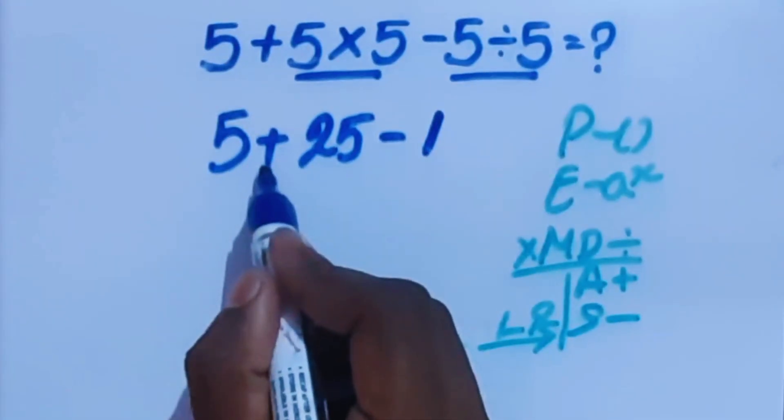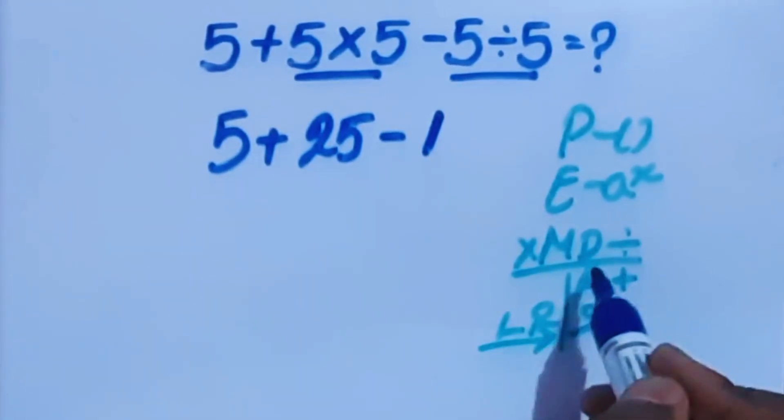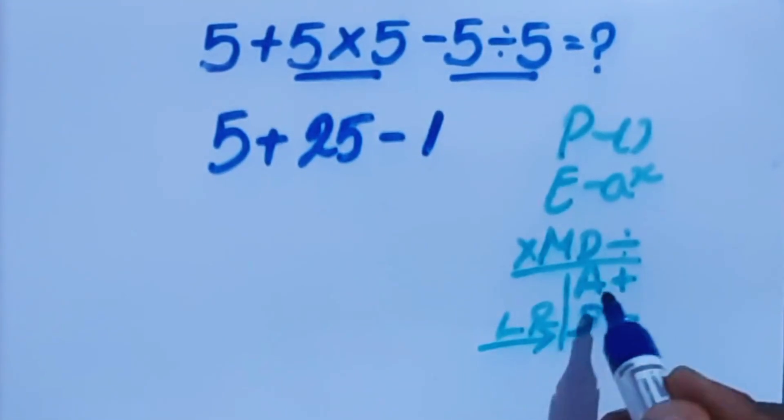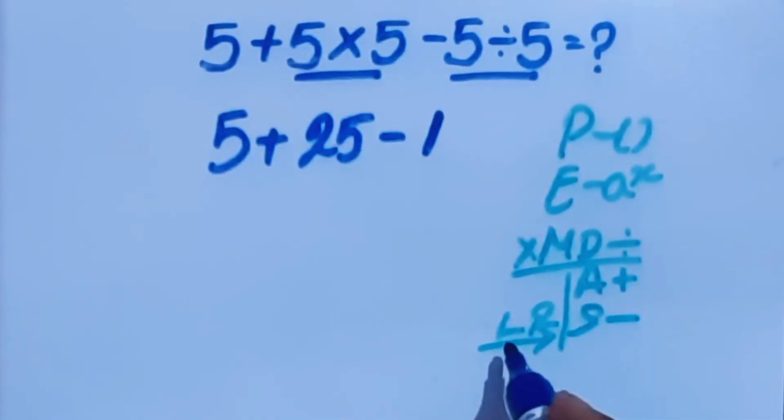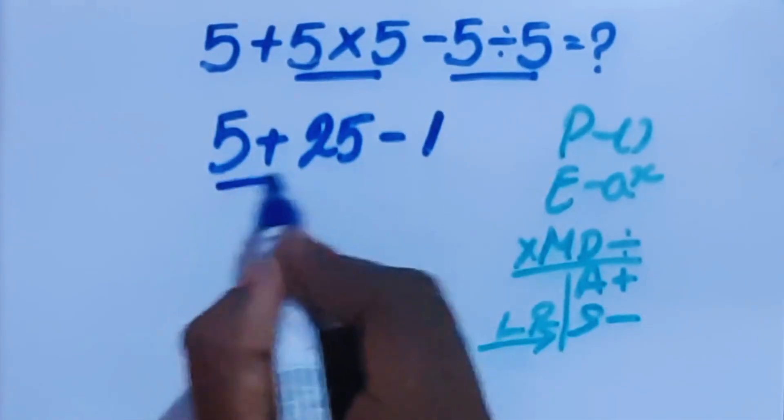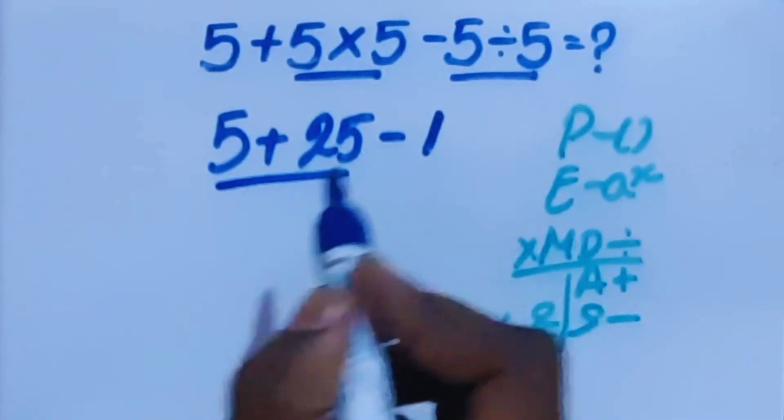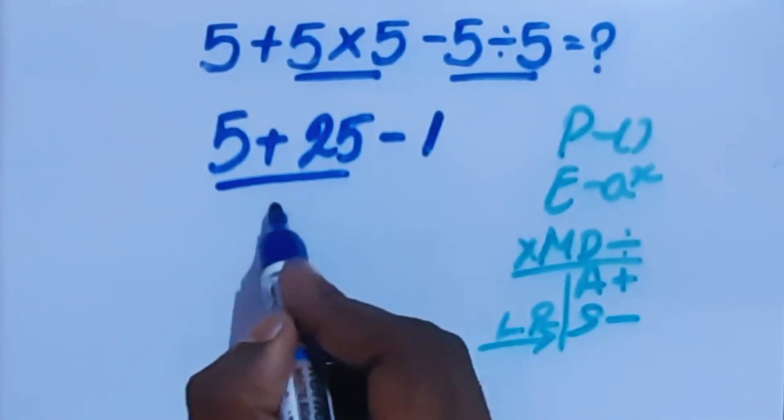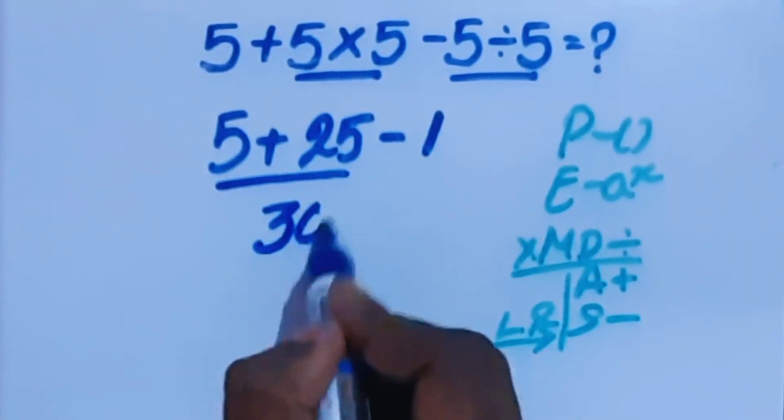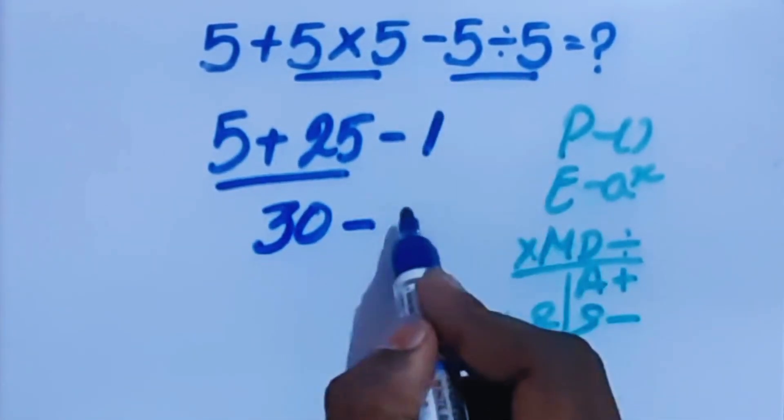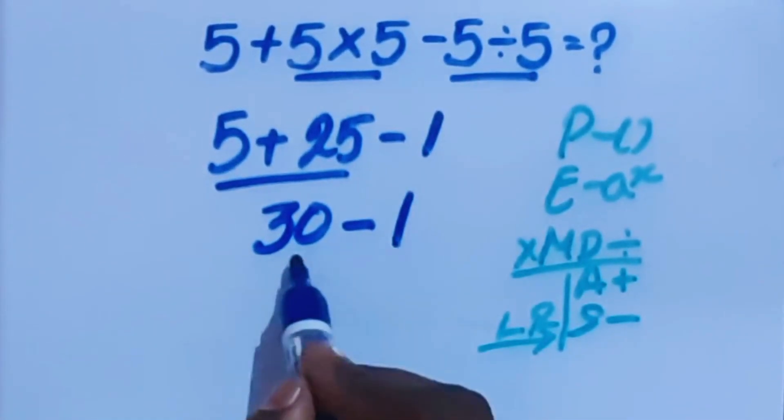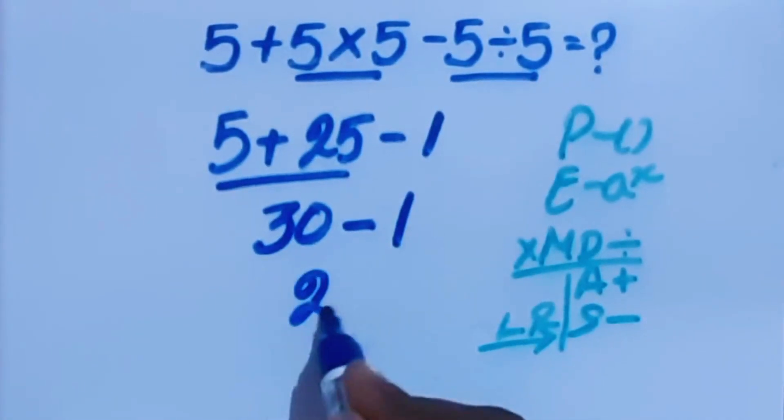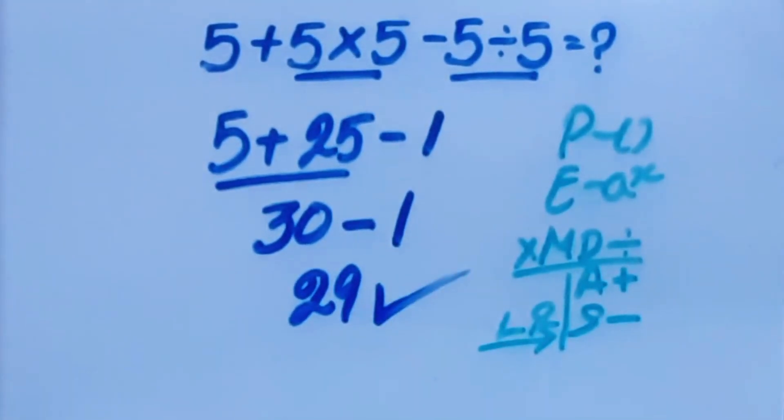We have addition and subtraction. Both are equal priority. For this equal priority, we go left to right in the problem. Left to right is 5 plus 25, which is 30 minus this 1. 30 minus 1 is 29, which is the correct answer.